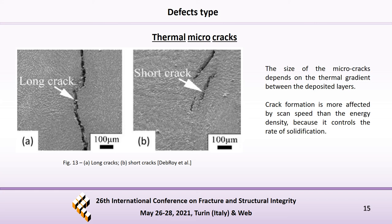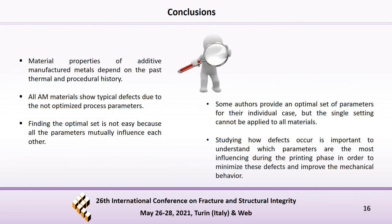The last type of defects presented in this work are thermal microcracks. These defects are a direct consequence of the severe residual thermal stresses induced from the fast cooling rate. The size of these microcracks depends on the thermal gradient between the deposited layers, which depends on the process parameters. In particular, energy density does not affect crack formation that much, while scan speed is considered the leading parameter because it controls the rate of solidification.